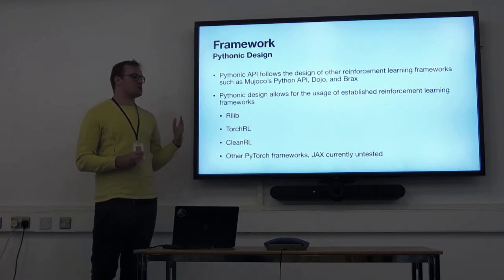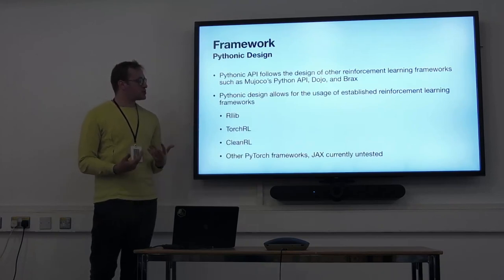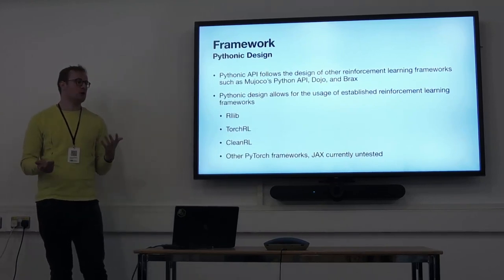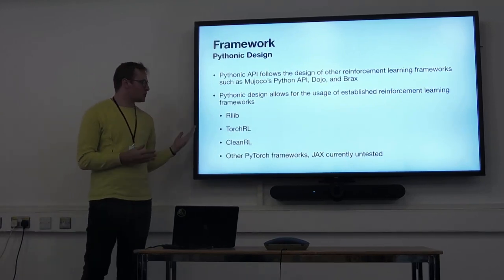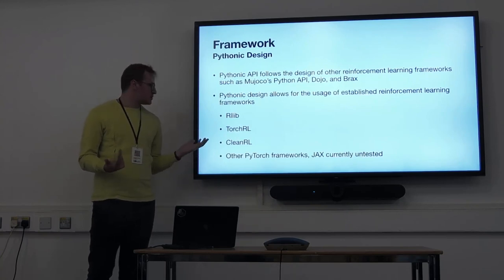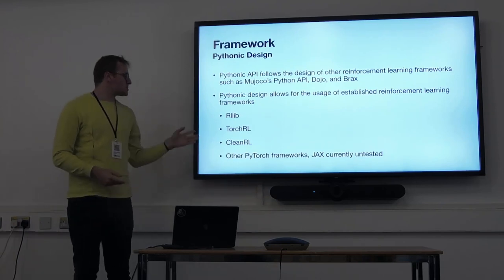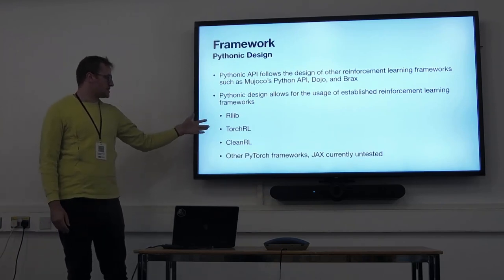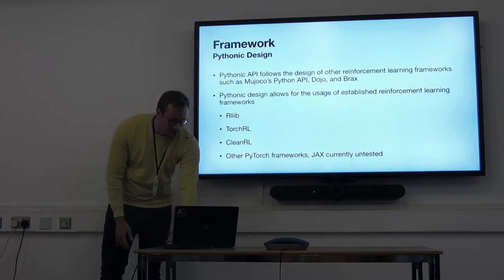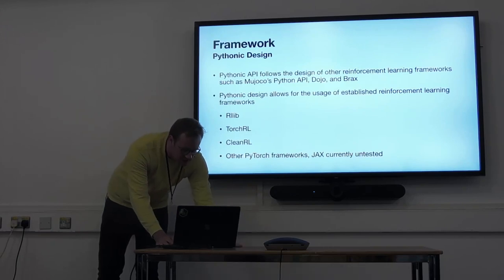The Pythonic API follows a lot of the existing design and is not trying to do anything completely novel there. Mostly because we want to allow users to just use any PyTorch-based RL library they prefer — there are a lot of them and we don't want to constrain that choice. JAX is untested but might also work. We mostly use RLib, but also did minor tests with TorchRL and CleanRL, which are two other big ones.